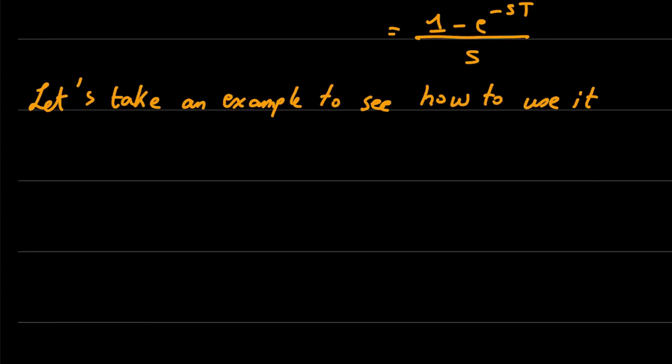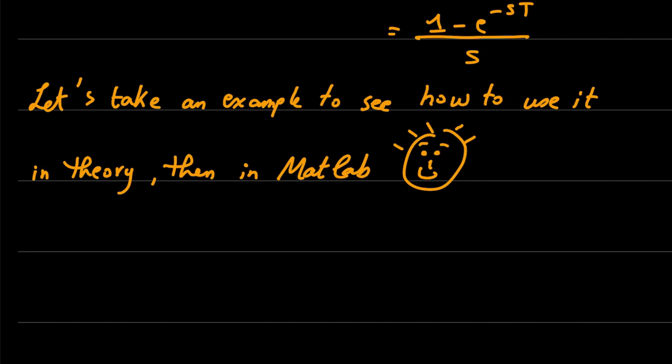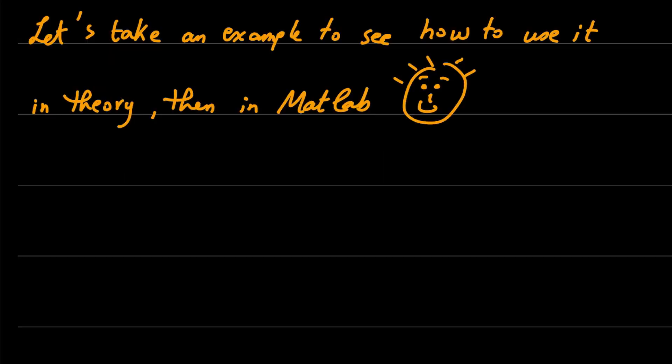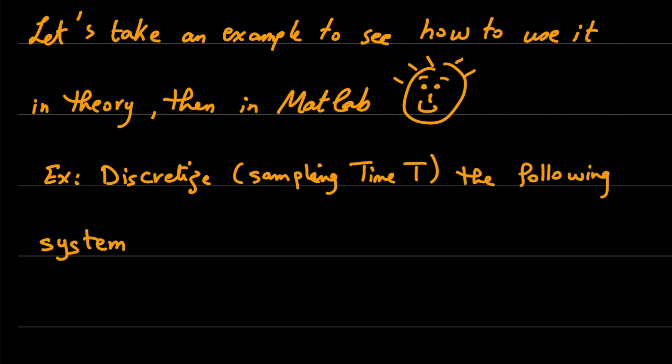Let's take an example to see how to use this in practice. Here is a small example. We want to discretize, using a sampling time T, the following system. We have this transfer function, it is a second-order transfer function.